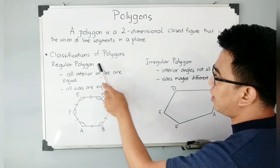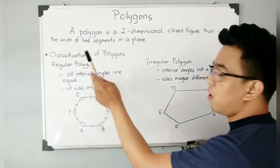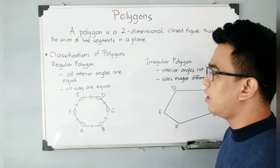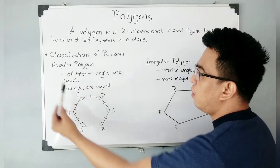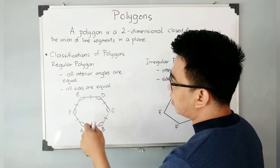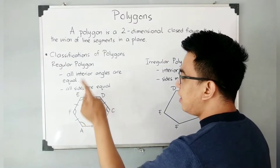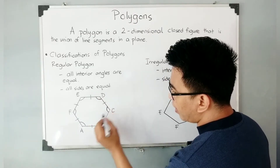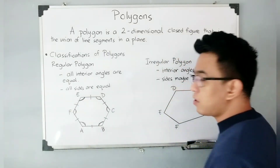What is the difference between these two polygons? When you say regular polygons, these are its characteristics. All interior angles are equal. And the second characteristic is that all sides are equal. So when you say regular polygon, we have angle A, angle B, angle C, angle D, angle E, and angle F. As you can see, they have the same markings. When you encounter a regular polygon, automatically all the angles are equal.